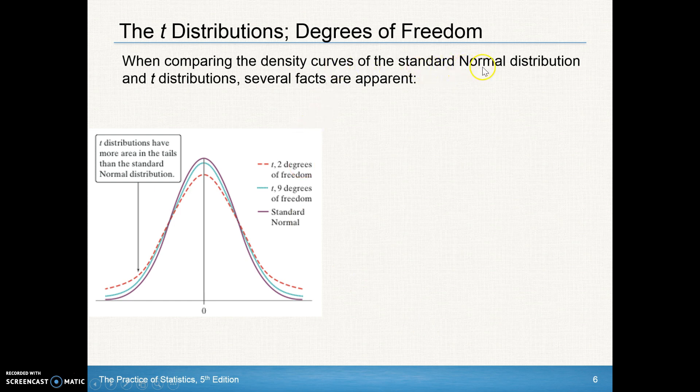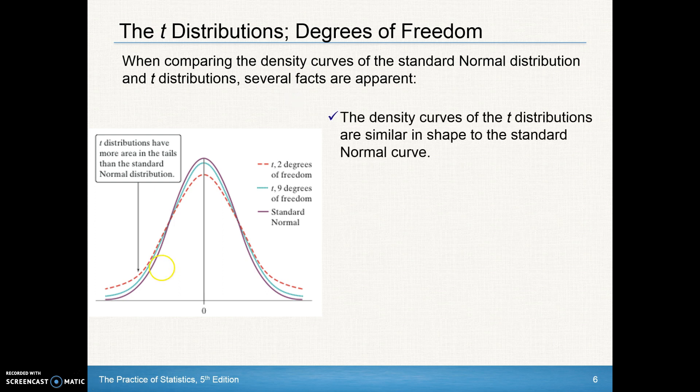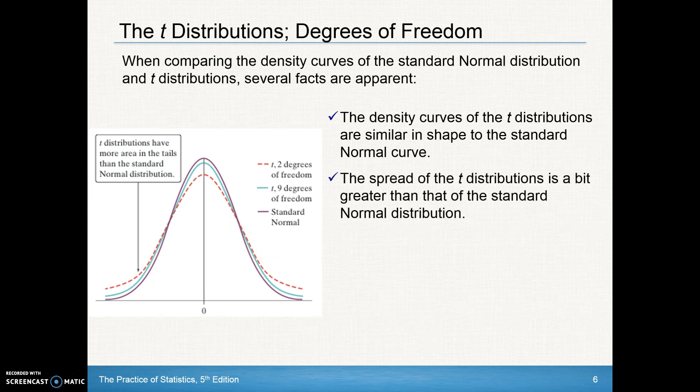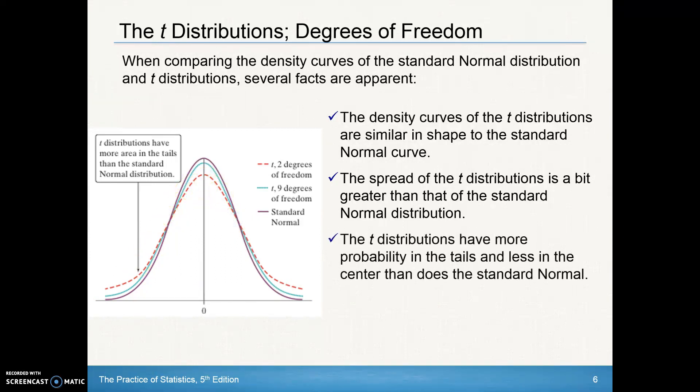When comparing the density curves of the standard normal distribution and t-distribution, several facts are apparent. The density curves of the t-distribution are similar in shape to the standard normal distribution, so they still look like that common bell curve. The spread of the t-distribution is a bit greater than that of the standard normal distribution. You can see here the dotted red line, the kind of aqua colored blue line has a little bit higher values over the tails. So that spread will be a little bit further, but you also notice that that peak is not quite as high as well. The t-distributions have more probability in the tails and less in the center. The standard normal curve, the purple curve right here compared to the t-distribution, the t-distributions are kind of smooshed down. The tops are less in the center, but have a little bit more in the tails.